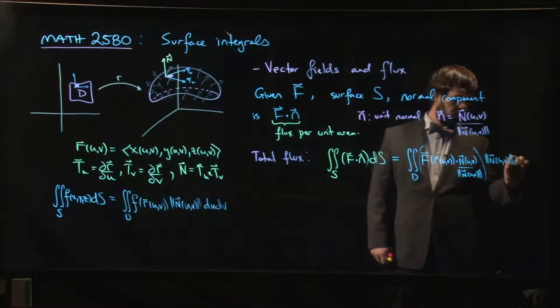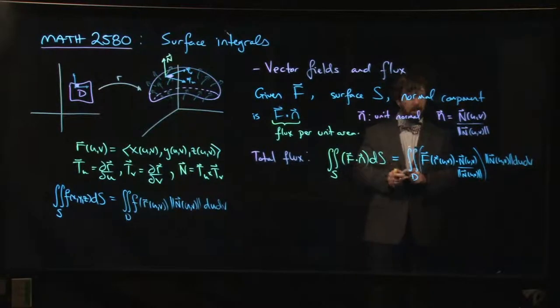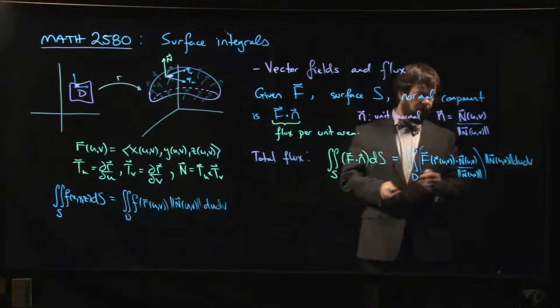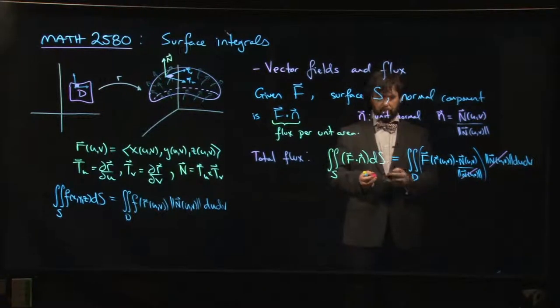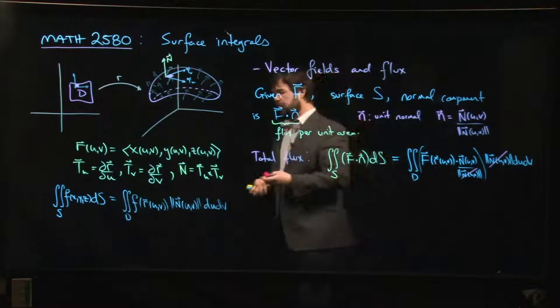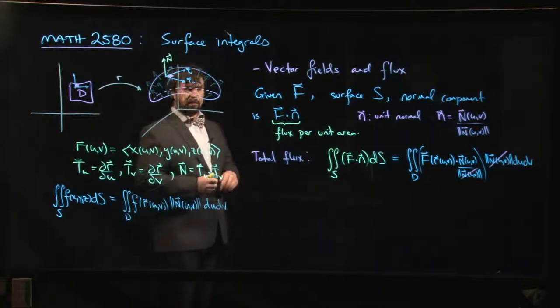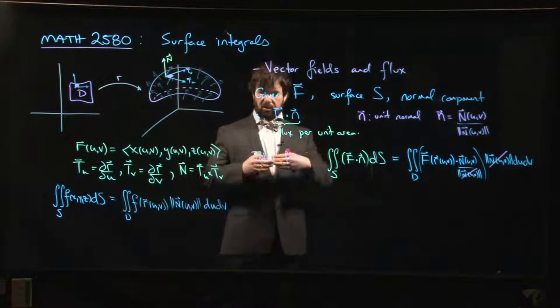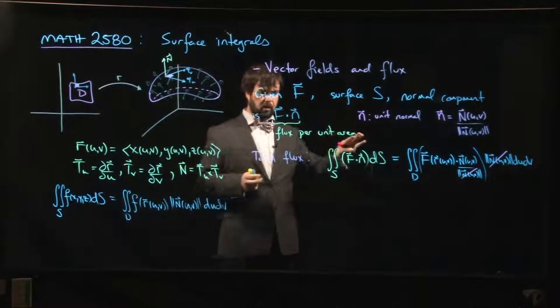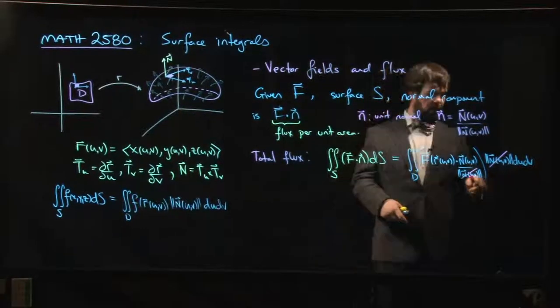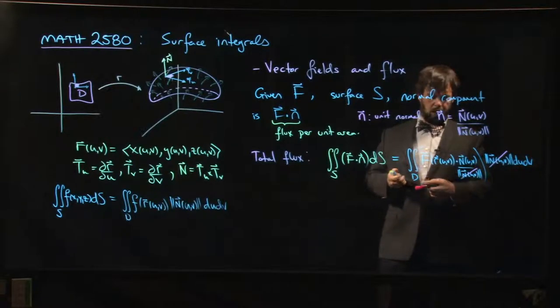One thing you'll notice is that magnitude cancels out. We had a similar thing happen with line integrals of vector fields. When we first introduced line integrals for vector fields, we were computing the tangential component by dotting with the unit tangent, then we realized that normalization factor was going to cancel out, so it wasn't really worth our while to bother.